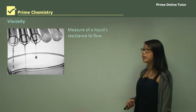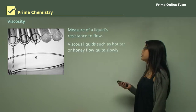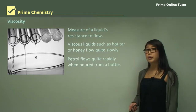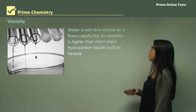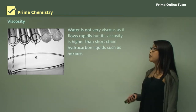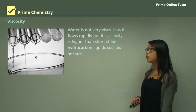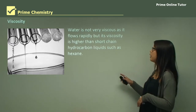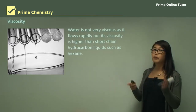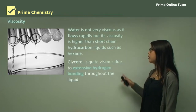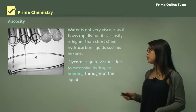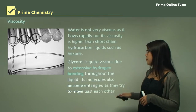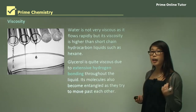Lastly, viscosity is the measure of a liquid's resistance to flow. Viscous liquids such as hot tar or honey flow quite slowly, but petrol flows quite quickly. Water is not very viscous and flows quite rapidly. Hydrocarbon liquids such as hexane also flow quickly because they're short. Glycerol is quite viscous because it's a long molecule with hydrogen bonding, which increases intermolecular forces, and because it's long it can get tangled up and therefore flows slowly.